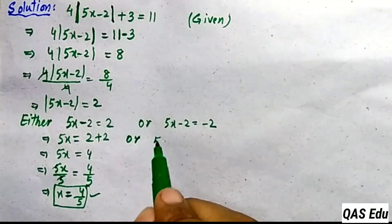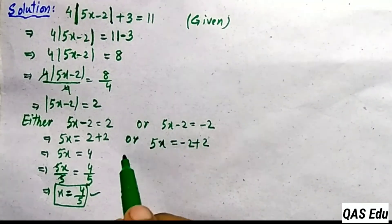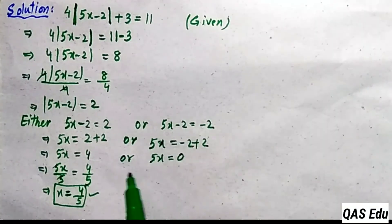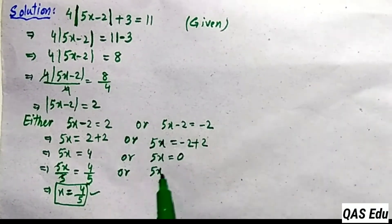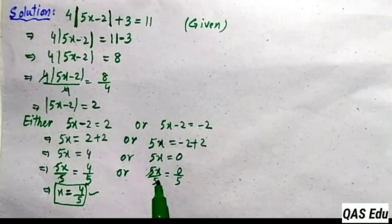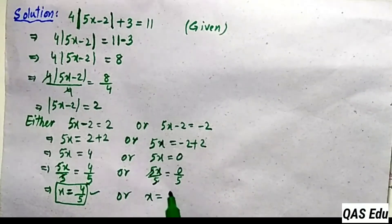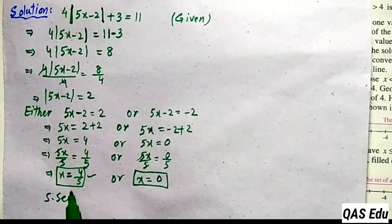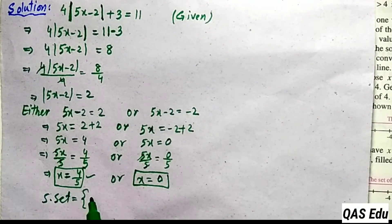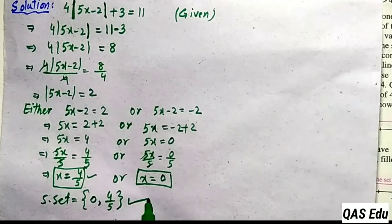We have a second answer. For the second equation: minus 2 plus 2 gives 0. Dividing both sides by 5: 5s cancel, x equals 0 divided by 5 which is 0. The solution set for x has two values: 0 and 4 over 5.